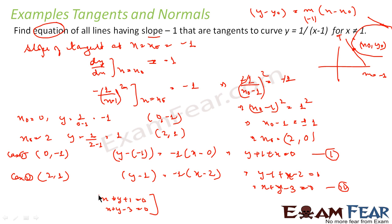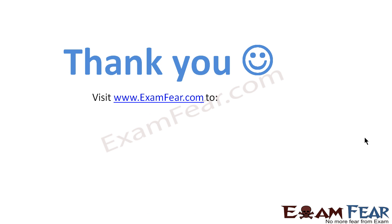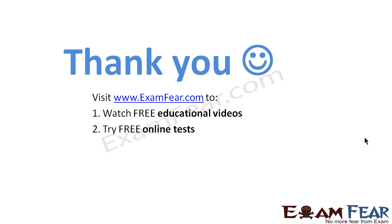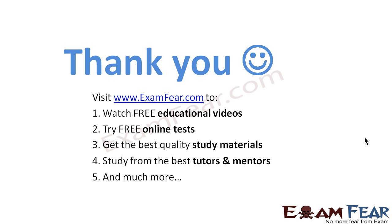For both these equations the slope is -1. If you want to visualize this: on the curve there are two places where the tangent slope is -1 — one point here and one point there. So there are two equations of tangent. This is how you can visualize this kind of problem. Visit examfear.com to watch free educational videos, try free online tests, get the best quality study materials, and study from the best tutors and mentors. Thanks once again.